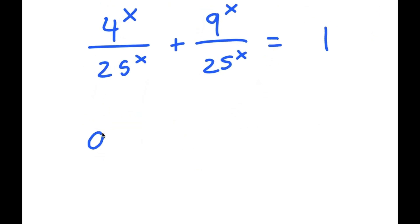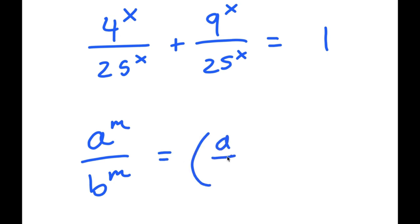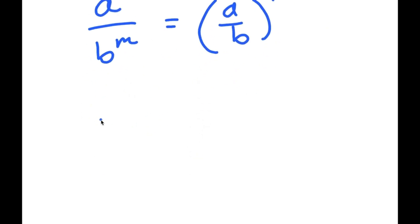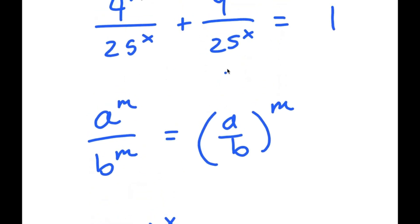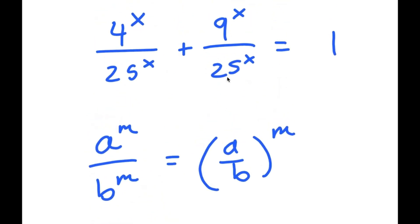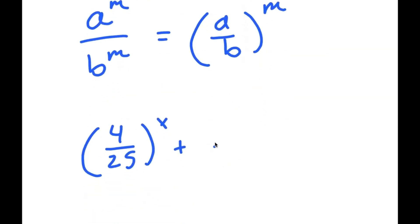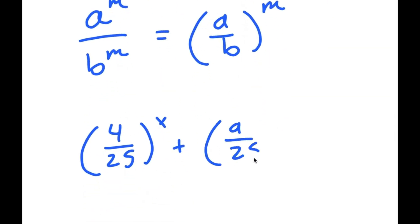Now if I have something in the form a to the power of m over b to the power of m, this is equal to a over b to the power of m. So 4 to the power of x over 25 to the power of x turns into 4 over 25 to the power of x, and 9 to the power of x over 25 to the power of x turns into 9 over 25 to the power of x.